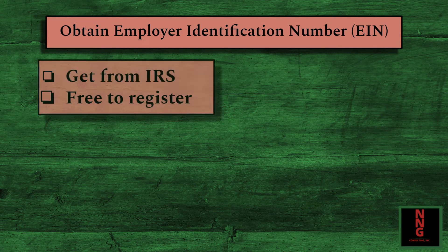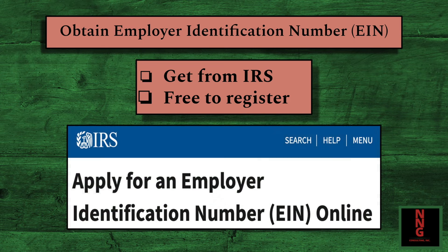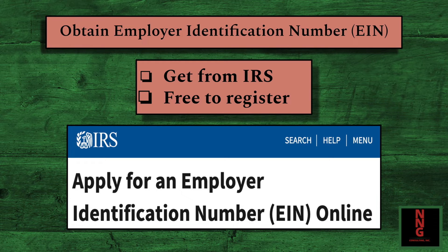Next, you'll obtain an employer identification number, your EIN. You can get this from the IRS and register for free. Your EIN is similar to a social security number but for your business. Just as you receive a certificate of formation from the Secretary of State — like a birth certificate — your EIN is like your business's social security number. It allows you to pay employees and set up your business account.